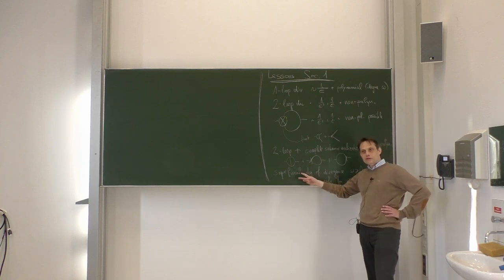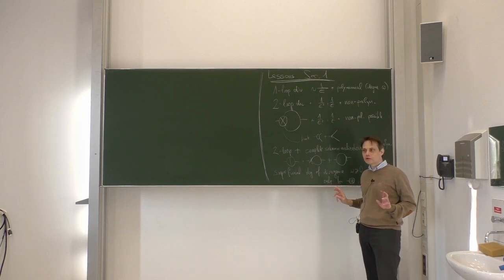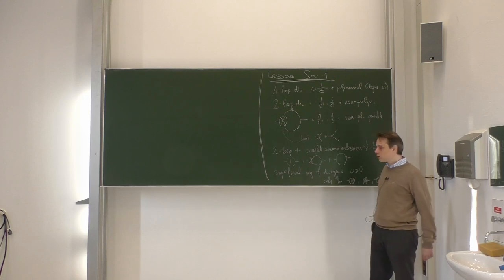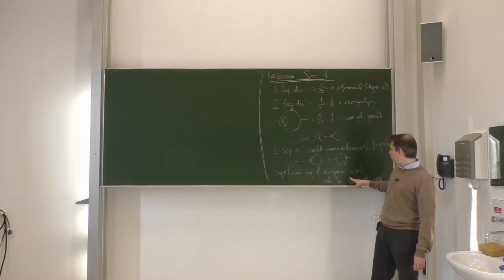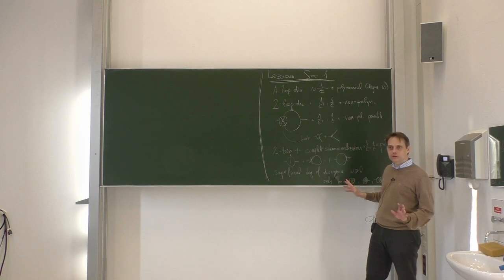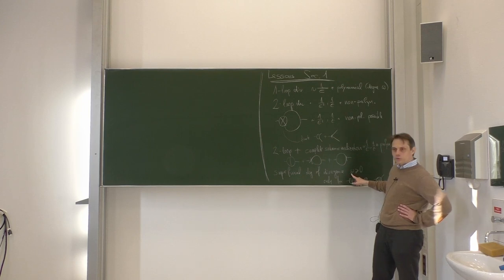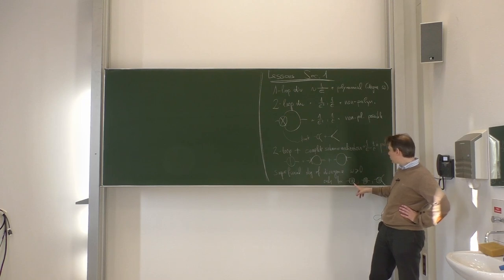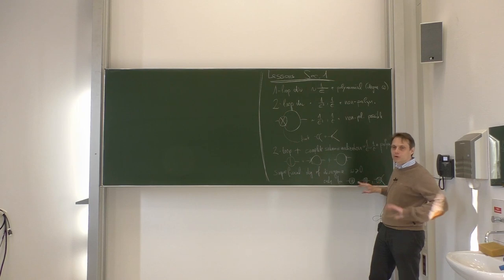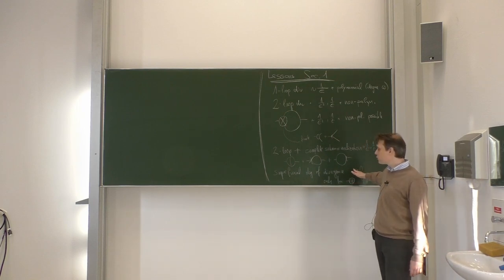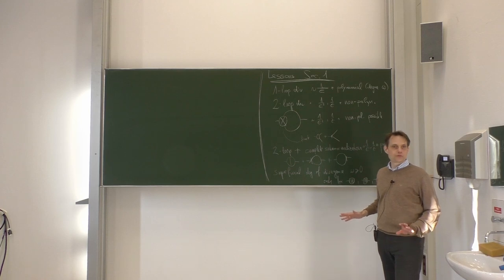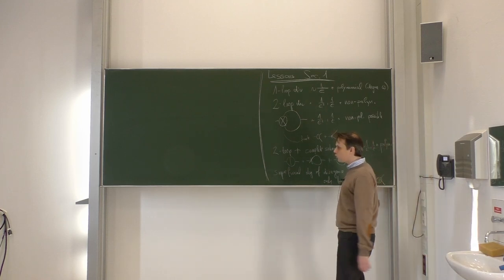We also looked at a criterion — the superficial degree of divergence — which is very simply obtained by looking at the overall power counting of the loop integral. In our φ³ theory in six dimensions, which is our typical theory, we only have three types of graphs with superficial divergence zero or bigger: namely the tadpole, the two-point function, and the three-point function.